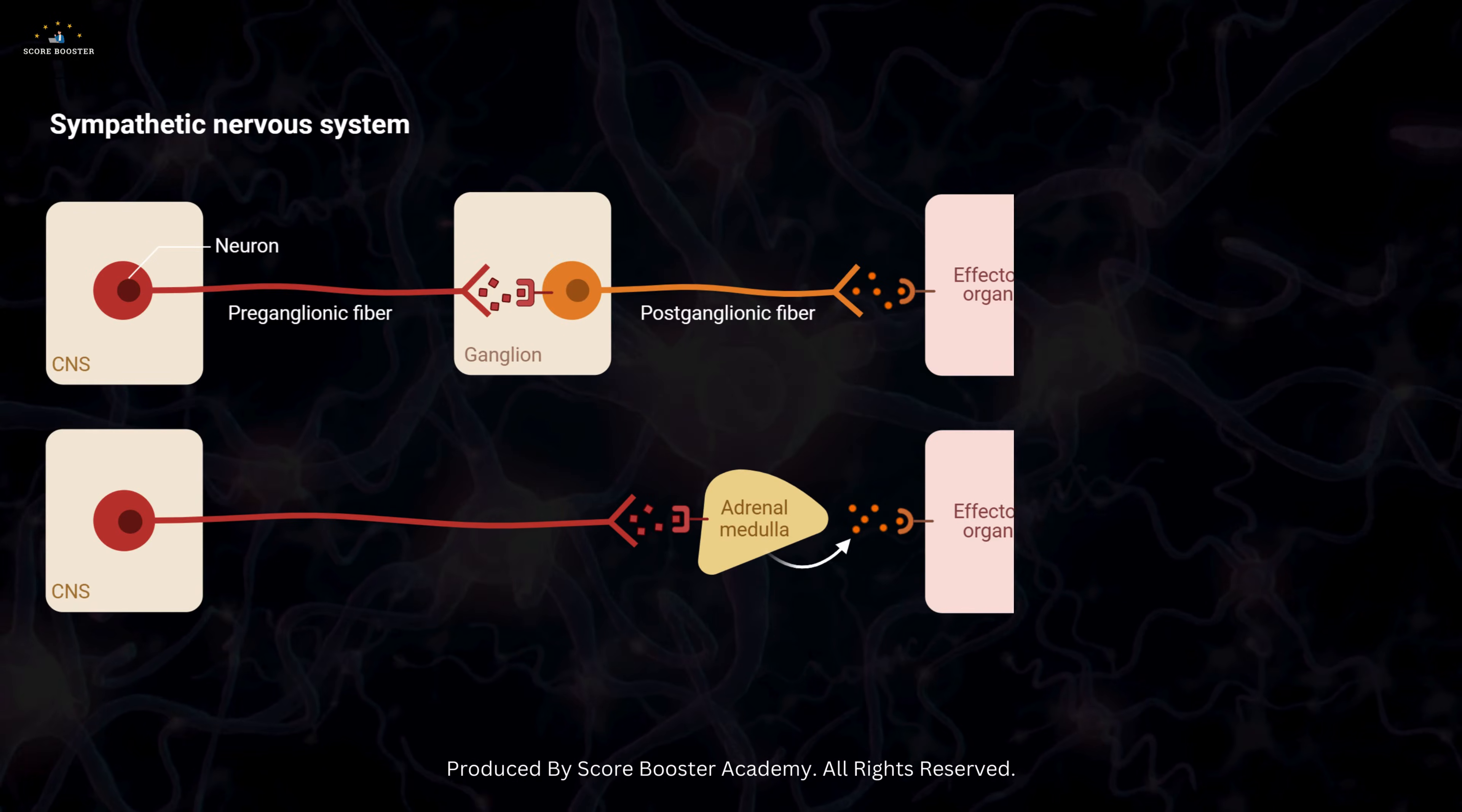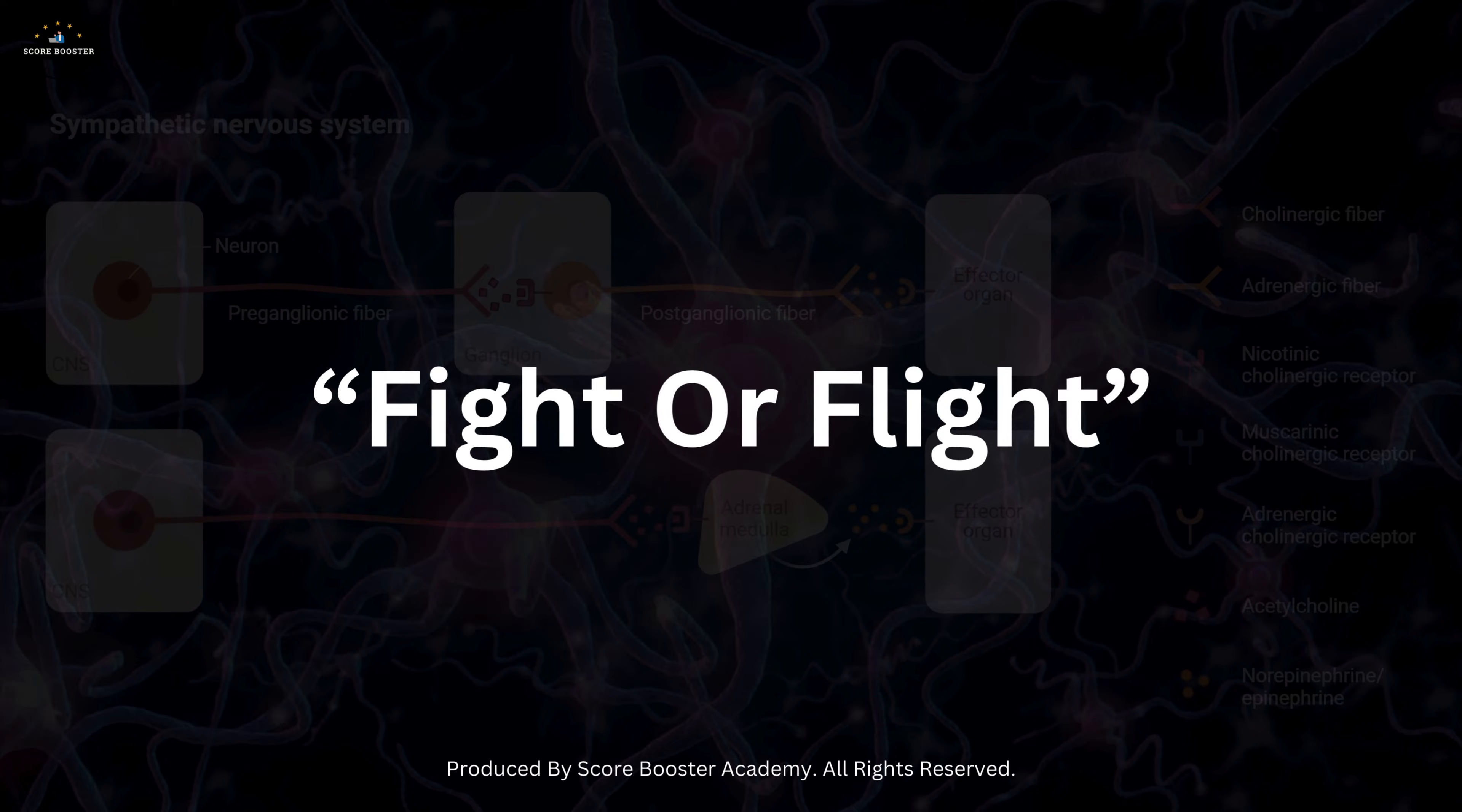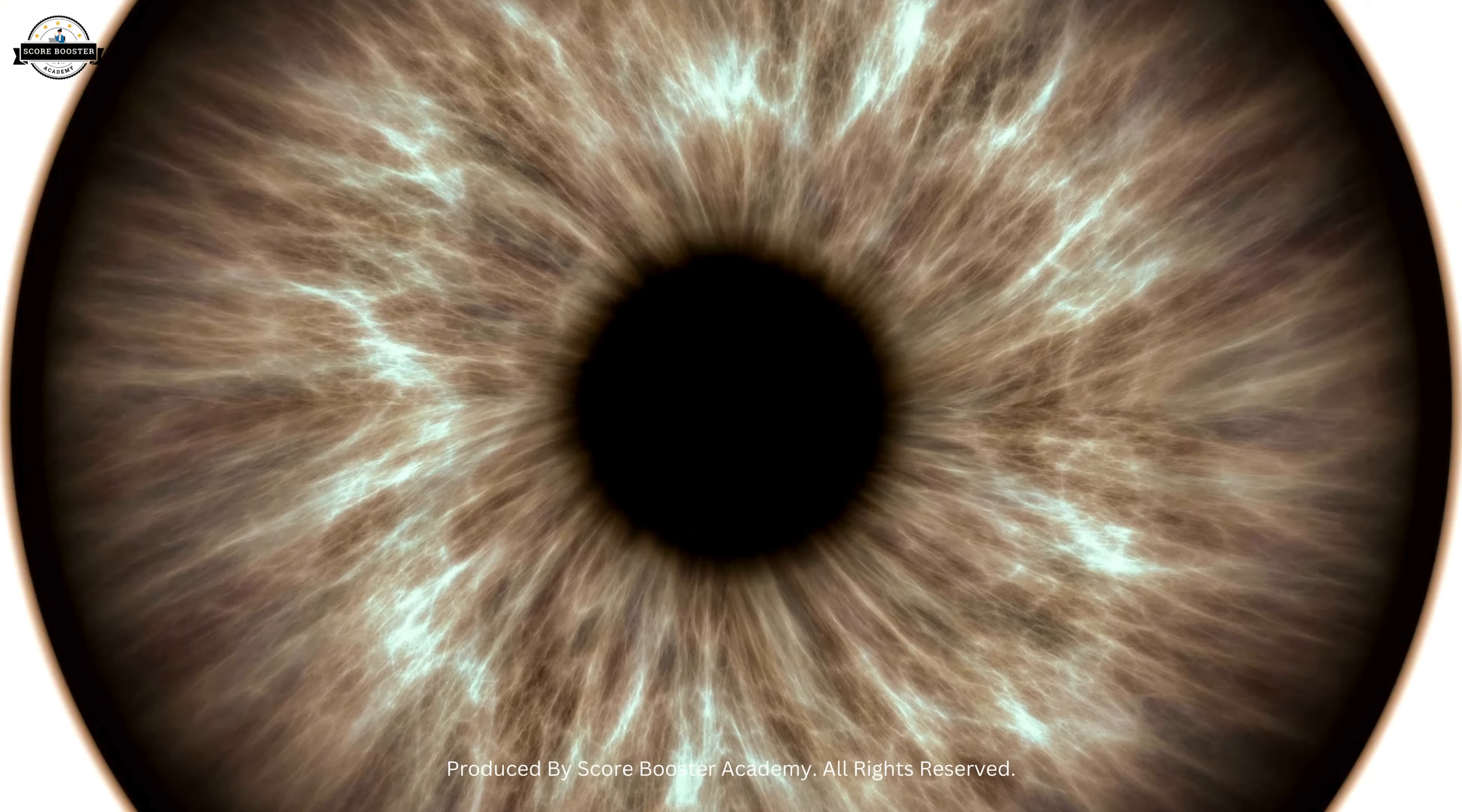The sympathetic system prepares the body for action, often referred to as the fight-or-flight response. For example, when you're scared, your heart rate increases and your pupils dilate.